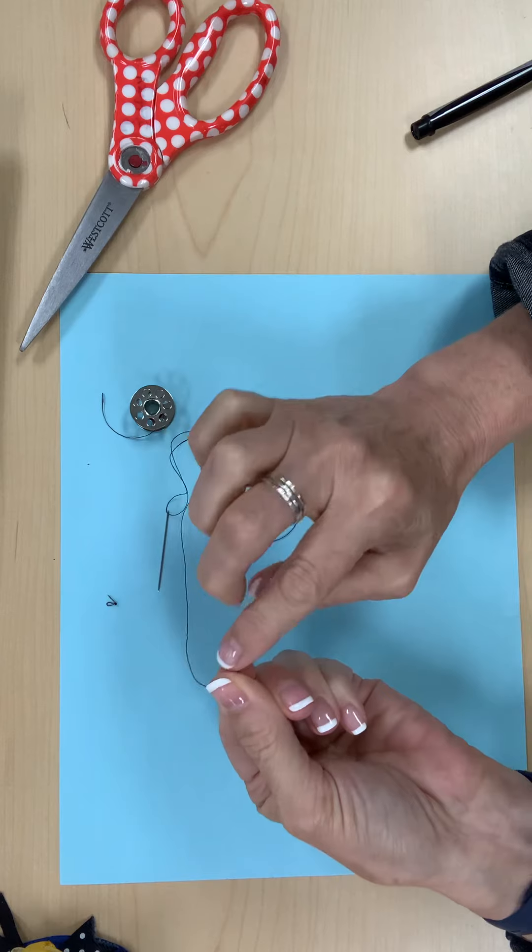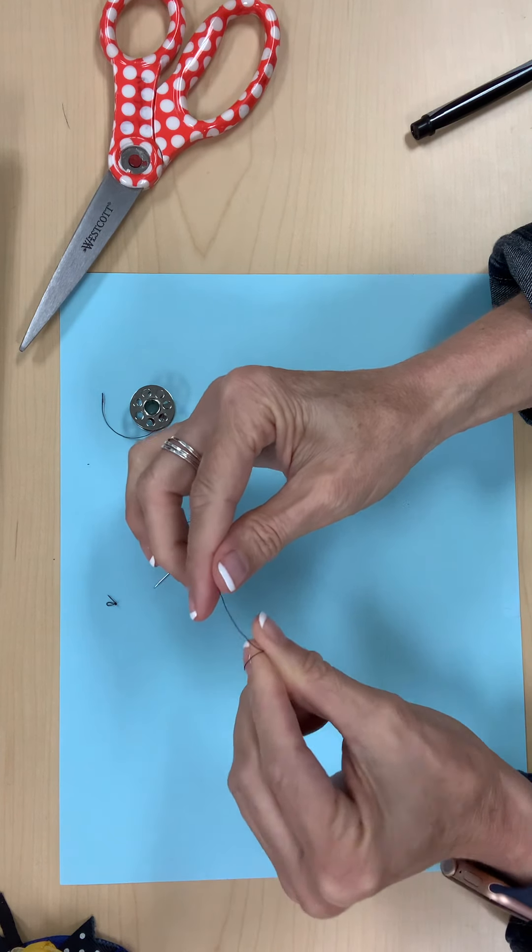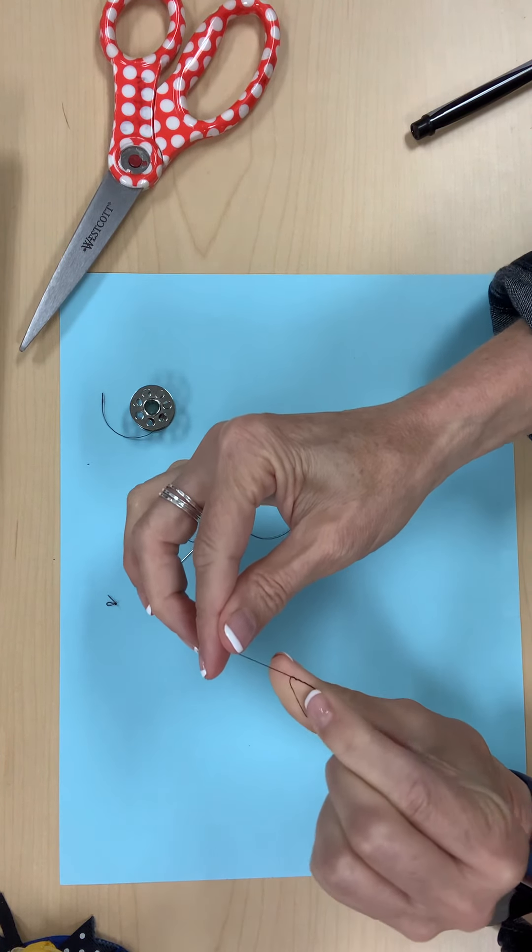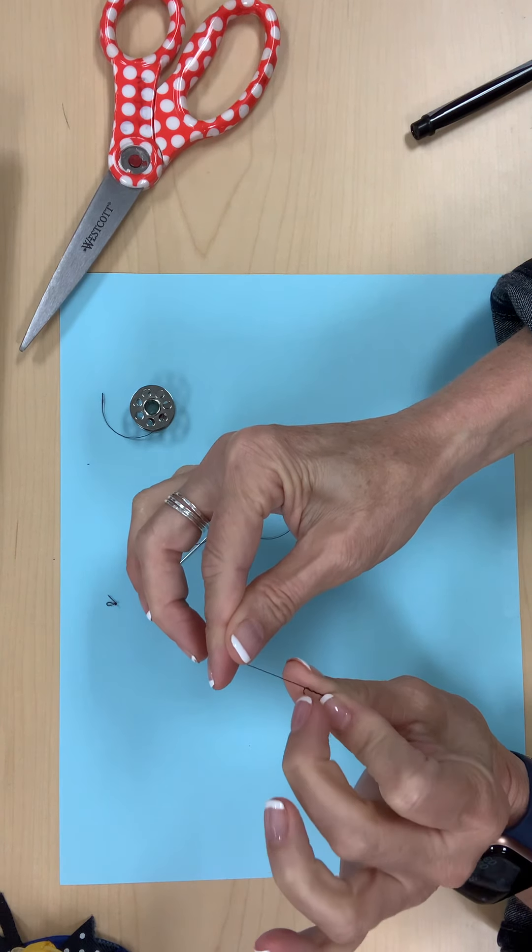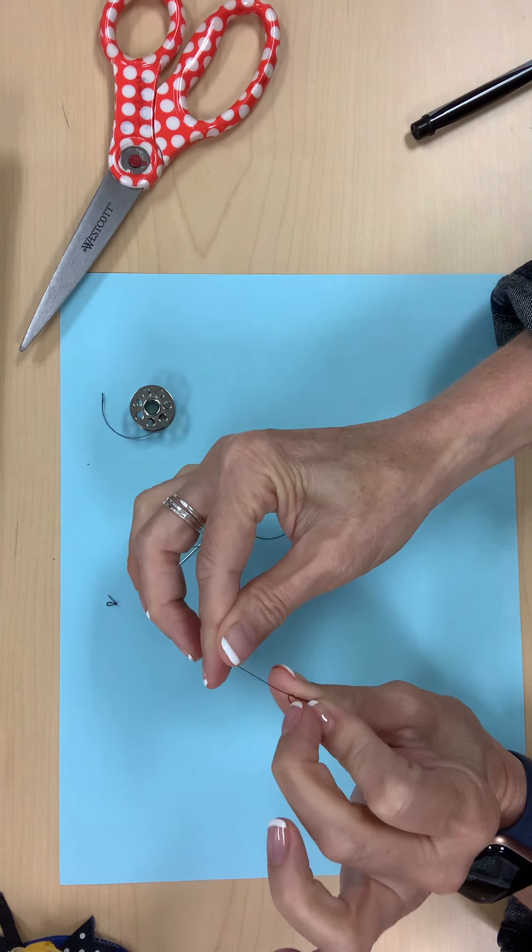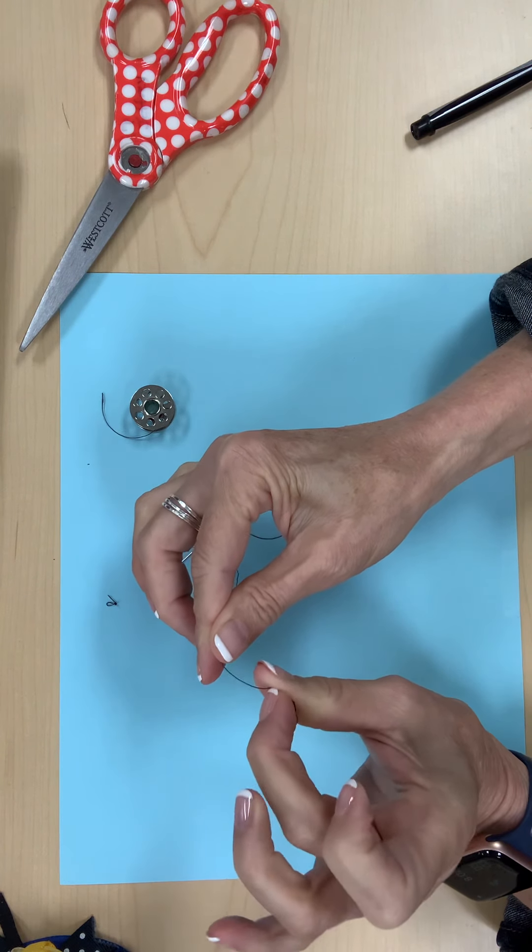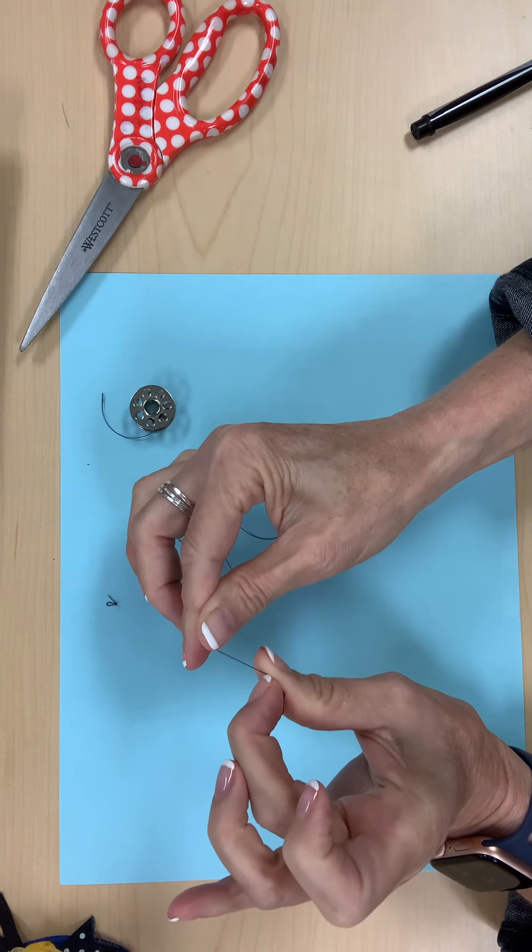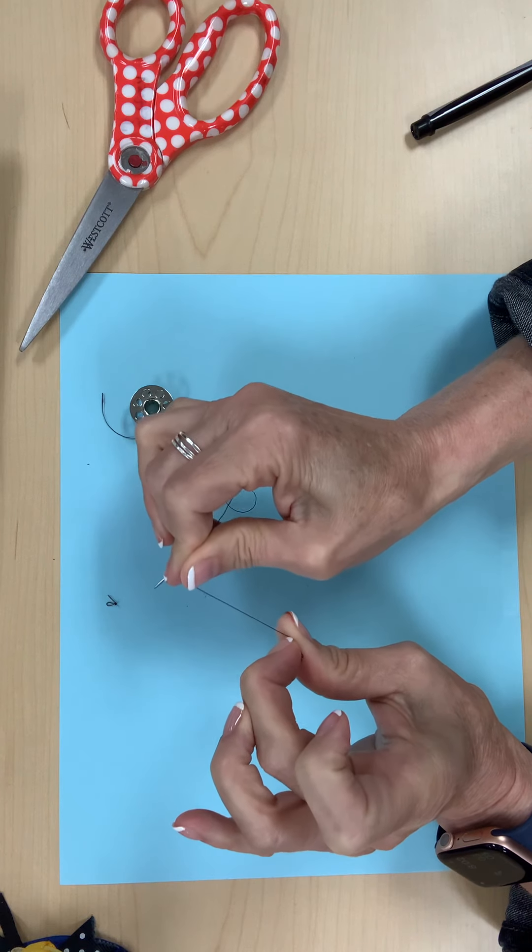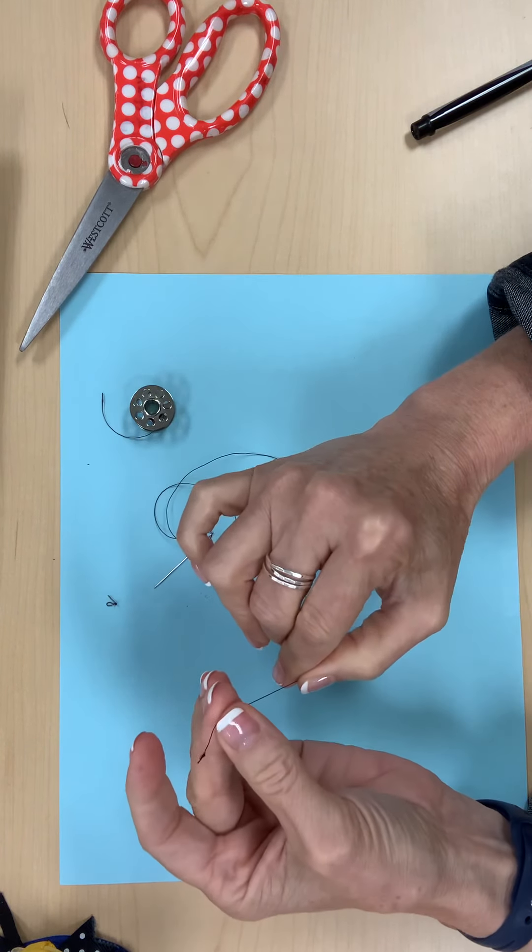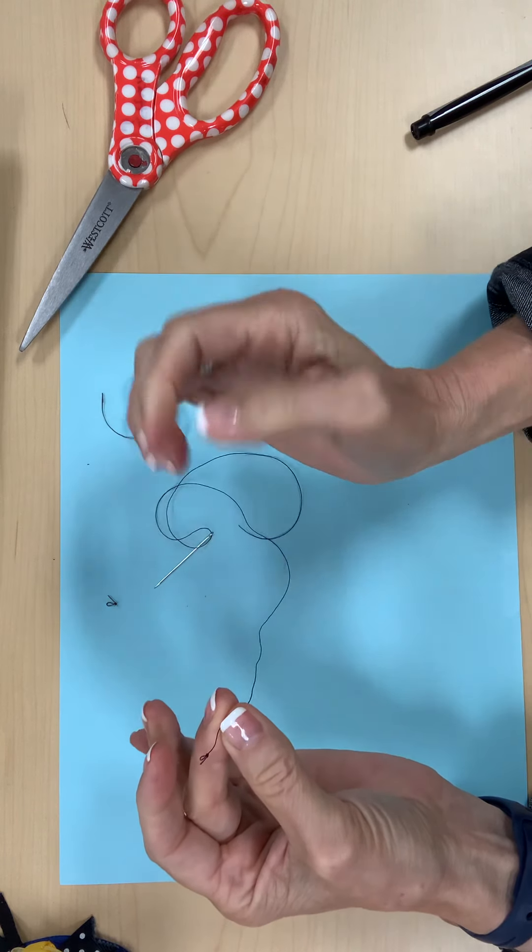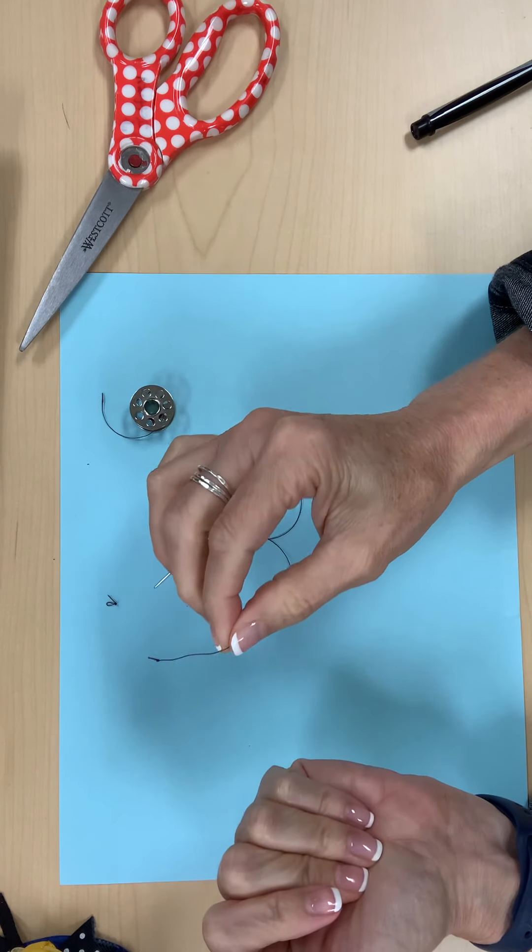Put my middle finger at the end of the twist, put my fingernail into my thumb, and then pull the thread through my nail, and it puts the knot right on the end. And that's how you knot your end, knot your thread.